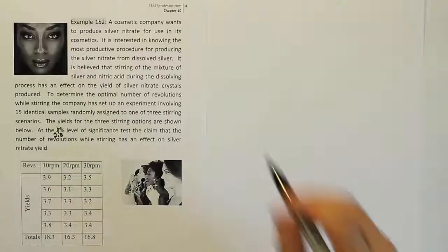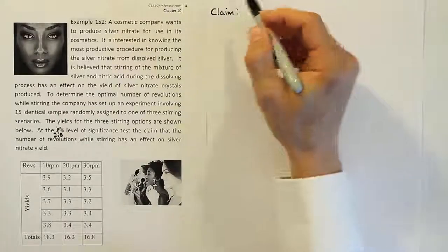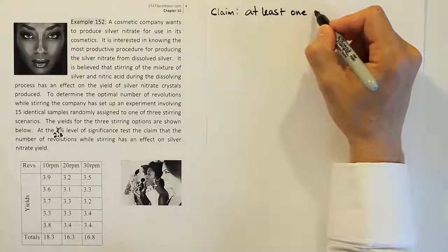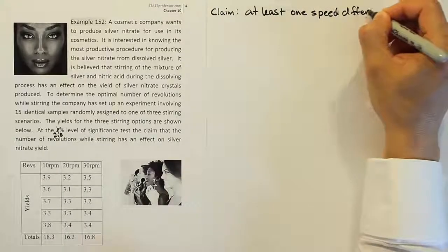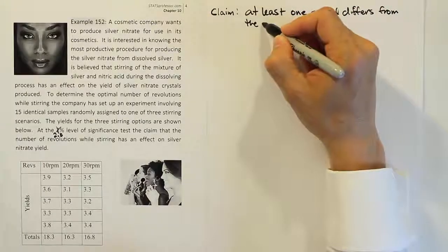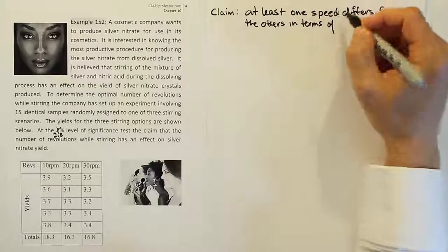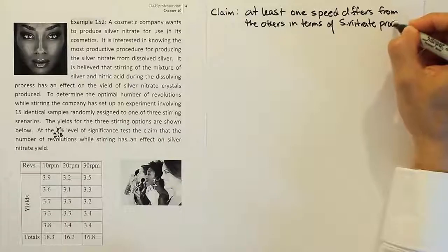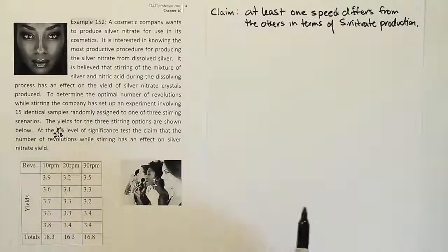So the claim is that we have an effect on silver nitrate. What I want to do here for the claim is simply to say: the claim is that at least one stirring speed differs from the others in terms of silver nitrate production. One of these three stirring speeds is different from the rest and has an effect on the silver nitrate production as a result.